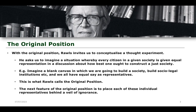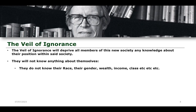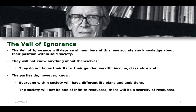The next feature of the original position is what is the key deciding factor that causes the construction of the just society, in Rawls' view — which is the idea of placing the representatives behind what he describes as a veil of ignorance. We have everyone in our society, everyone in our meeting, and now what happens is they all get put behind a veil of ignorance. What the veil of ignorance will do is deprive all members of this new society any knowledge about their position within said society. They will not know anything about themselves: they will not know their race, their gender, their wealth, their income, their class — anything at all. The parties do, however, know that everyone in society will have different life plans and ambitions, and that the society will not be one of infinite resources — there will be a scarcity of resources.